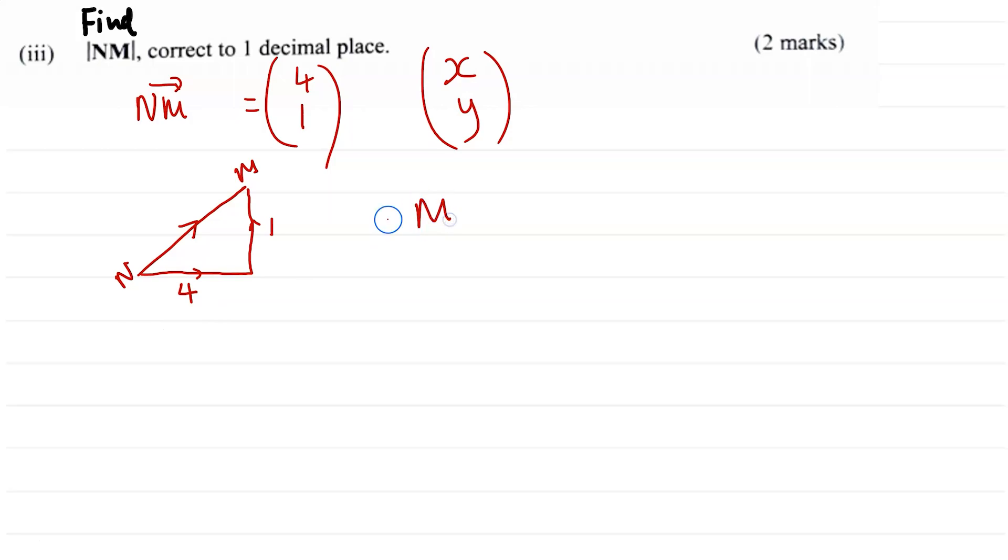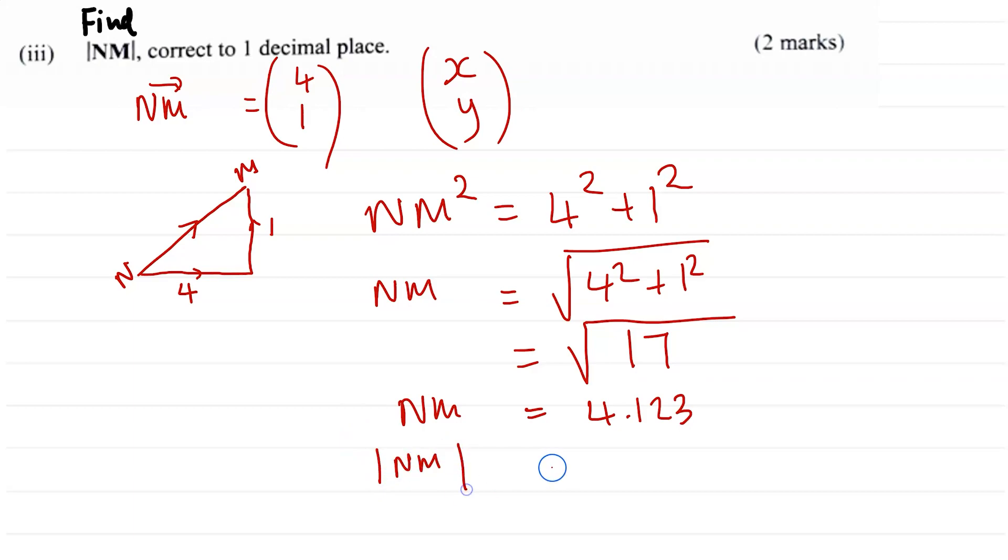So we can say NM squared is equal to 4 squared plus 1 squared. So NM is the square root of 4 squared plus 1 squared, which is going to be the square root of 16 + 1, so square root of 17. So NM is equal to 4.123, but we're asked to give the answer to 1 decimal place. Therefore, the magnitude of NM is going to be equal to 4.1, correct to 1 decimal place. And this is the answer for part III.